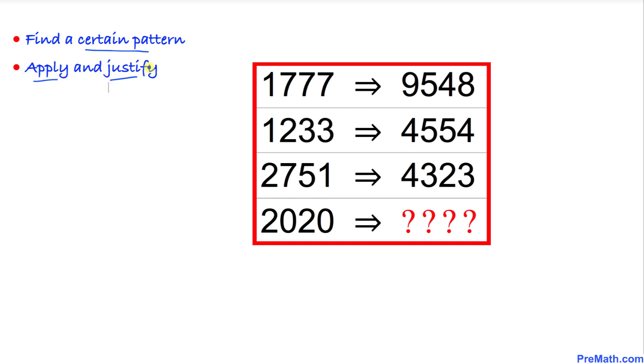By looking very carefully, we can see if I write 1777 in backward order, or in reverse order, that is going to become 7771. If I add these numbers, that is going to give us 9548.